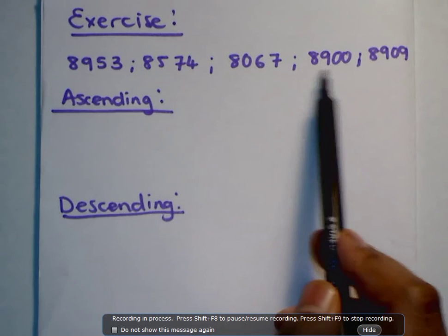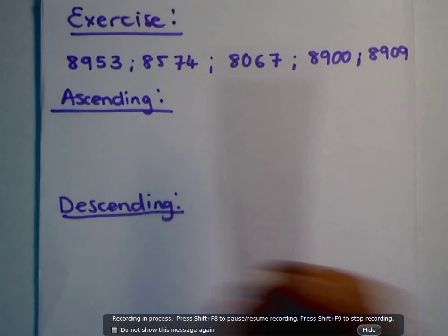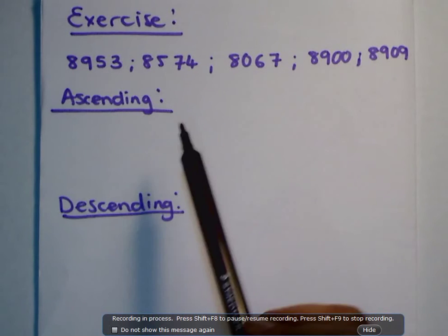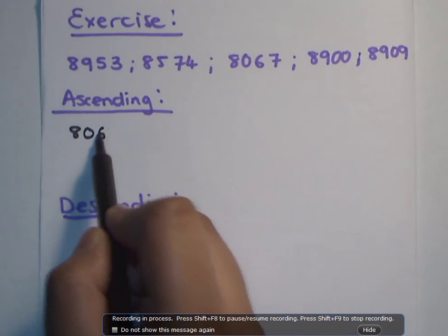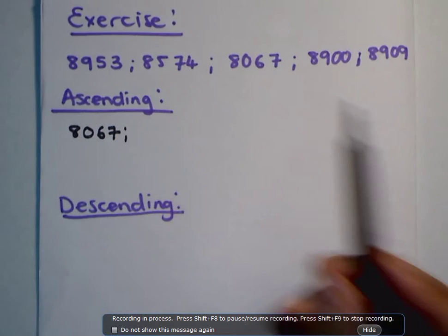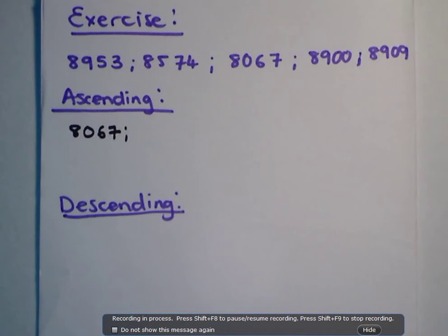third number, fourth number, fifth number. So from these five numbers, which number is the smallest number? And we found that the smallest number is 8067. Next, the next number after that, which is the second smallest number, is 8574.